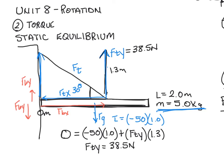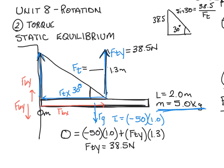We place that vector to build the reference right triangle, which we use to solve for the resultant force of tension and the force of tension in the x direction. Redrawing that reference right triangle, we solve for both vectors. The resultant force of tension is 77 Newtons, and the force of tension in the x direction is 67 Newtons.